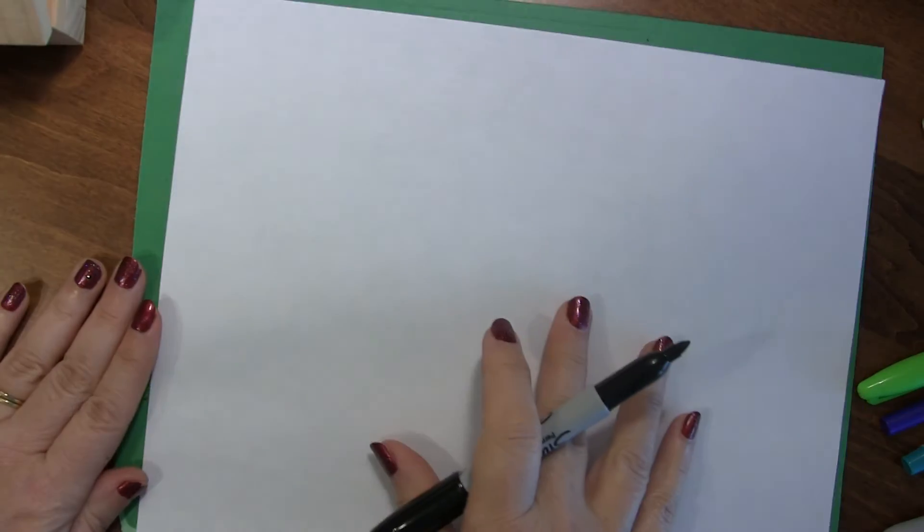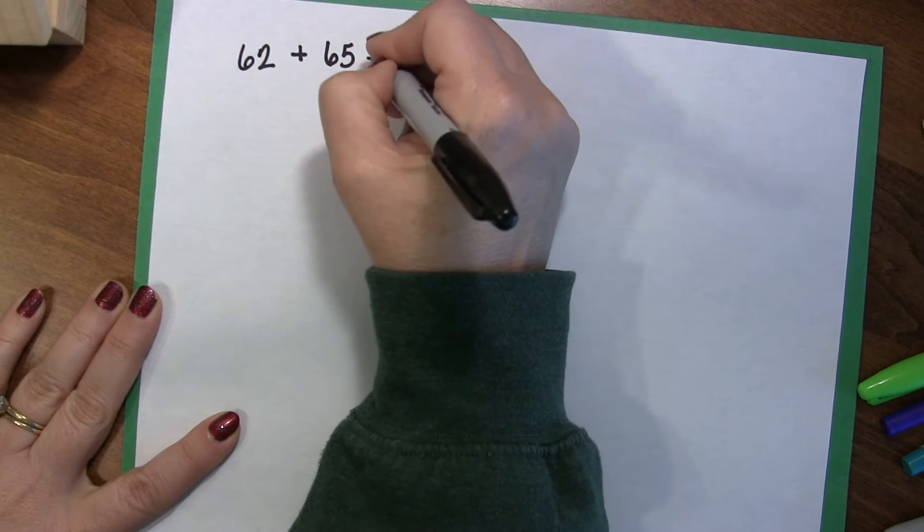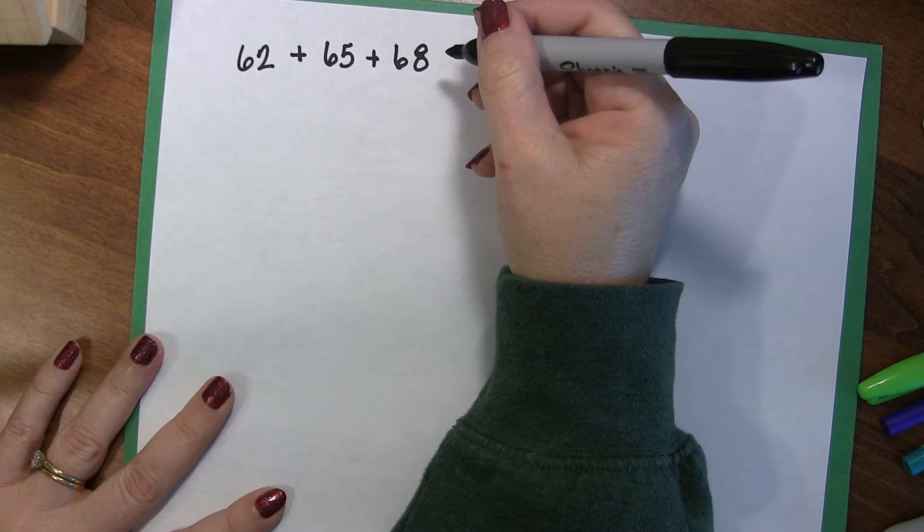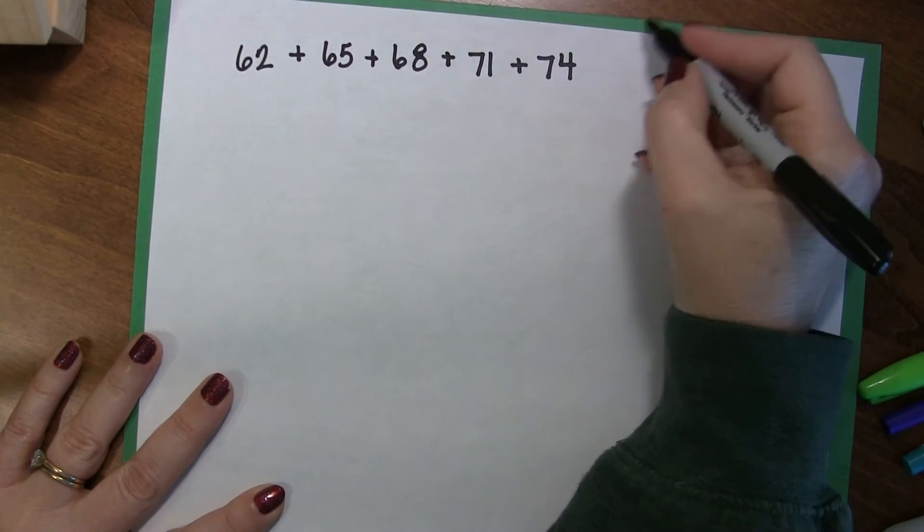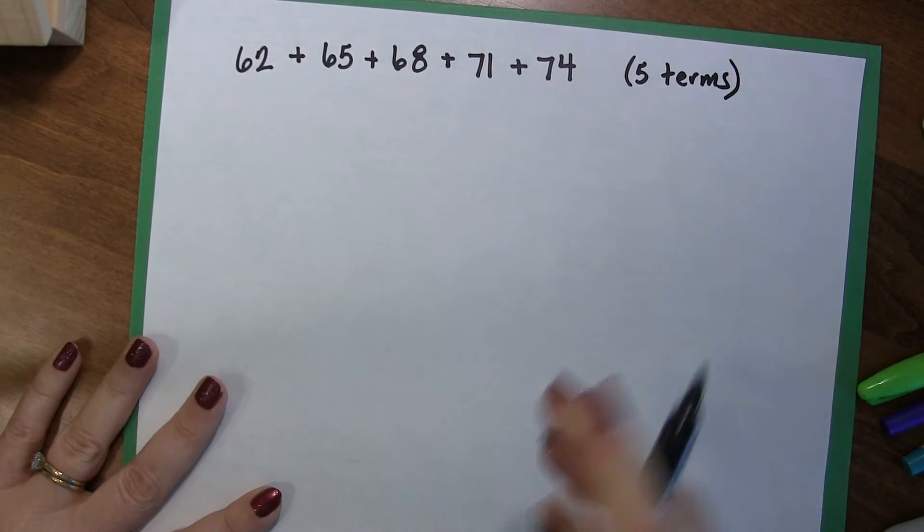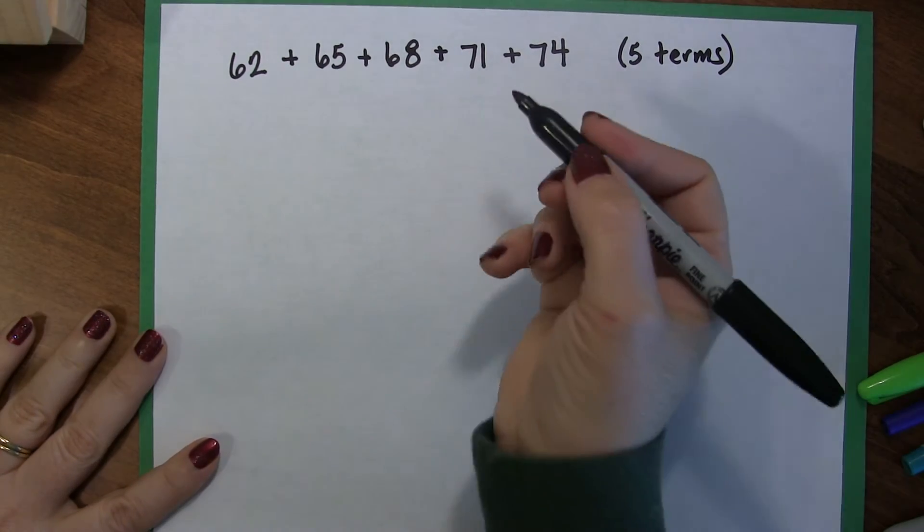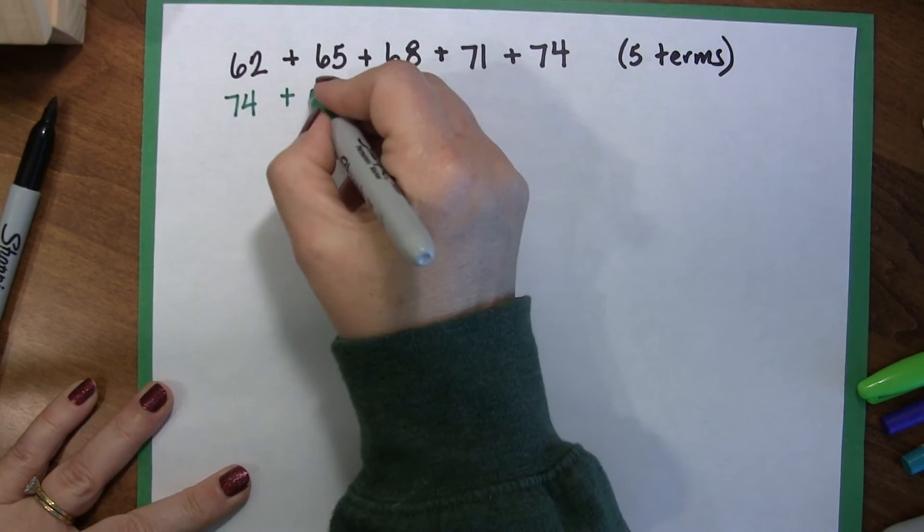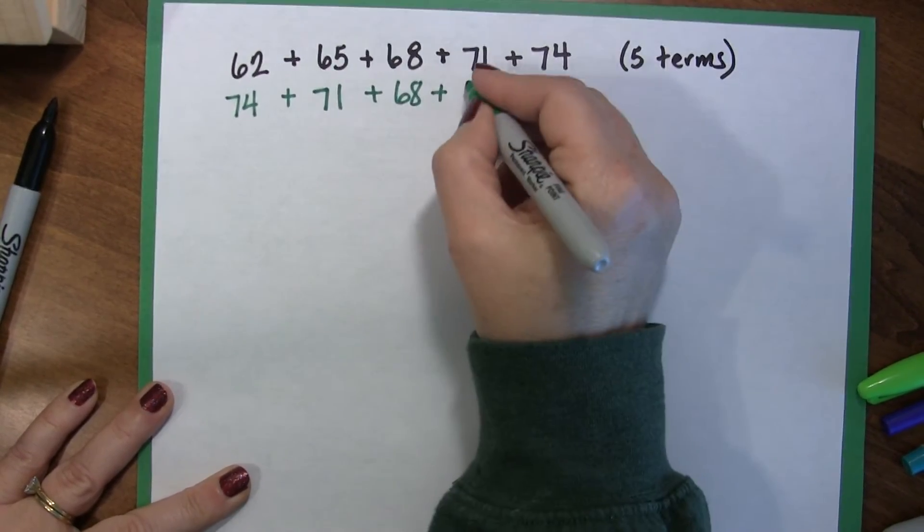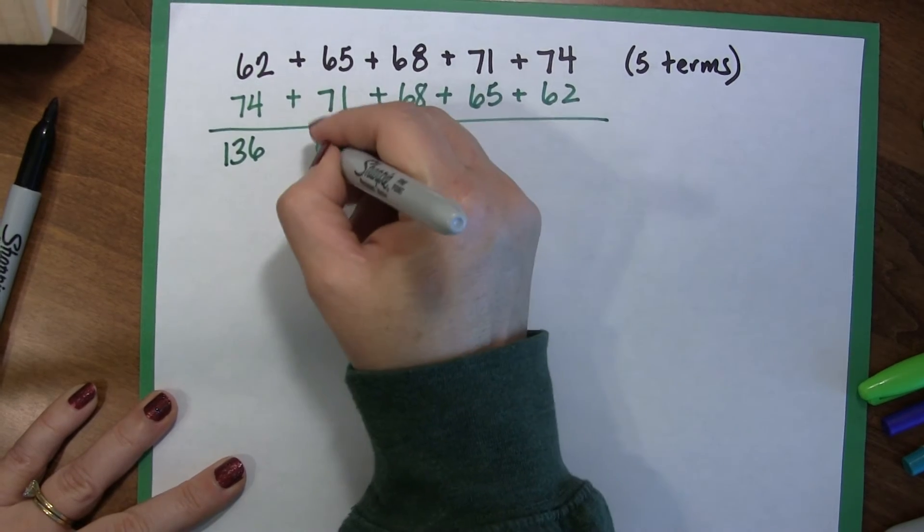Let's do another example, just to see how you have this going on. And I'm going to make it a little bit harder this time. I'm going to give you 62 plus 65 plus 68 plus 71 plus 74. So that is 1, 2, 3, 4, 5 terms. Okay? Good enough. So, in order to get the sum of this, without just plugging it in our calculator, here's what we're going to do. We're going to rewrite our equation backwards. So this is going to be 74 plus 71 plus 68 plus 65 plus 62. And we're going to add it together. And we get 136 for each term.